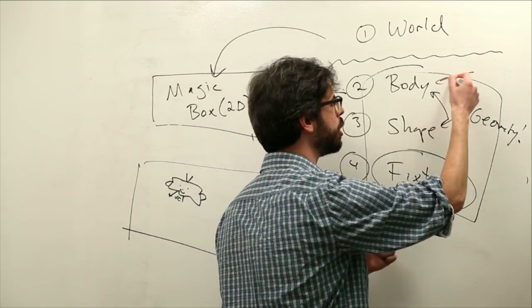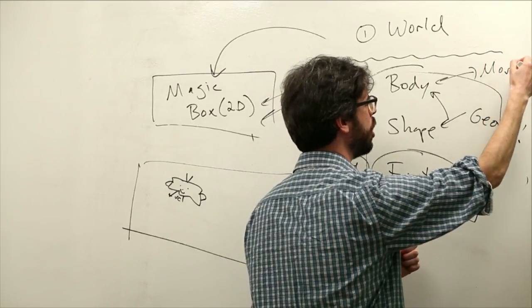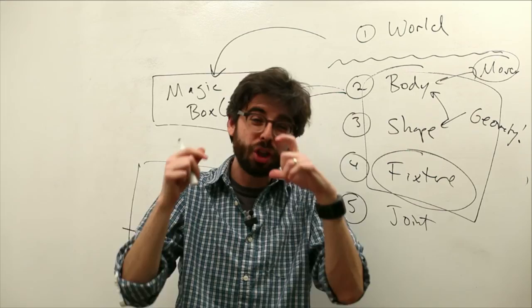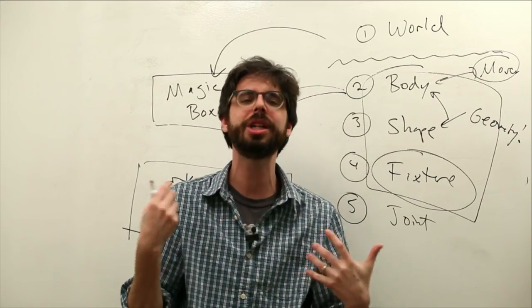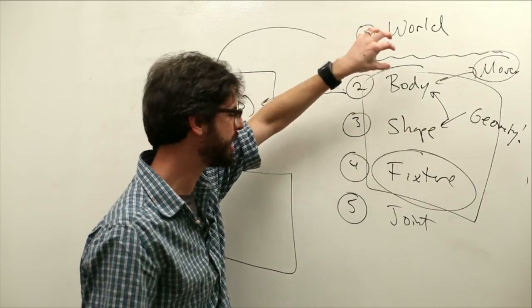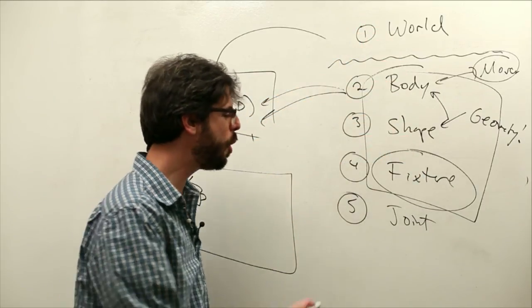So the body is the thing. That's the mover. This is the equivalent to the mover class that we've been making all along. The difference is now our movers didn't have geometry. Sure, we drew something on the screen, but there was no collisions. So we have to start worrying about geometry, which we have to define shapes that are attached to bodies with fixtures.